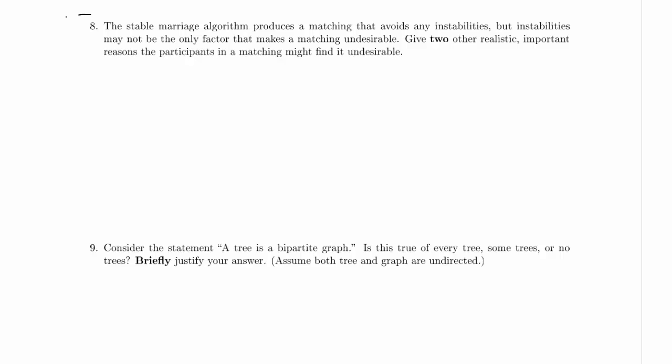We are working on part 8 of problem 3 in the practice exam. The stable marriage algorithm produces a matching that avoids any instabilities, but instabilities may not be the only factor that makes a matching undesirable. Give two other realistic important reasons the participants in a matching might find it undesirable.